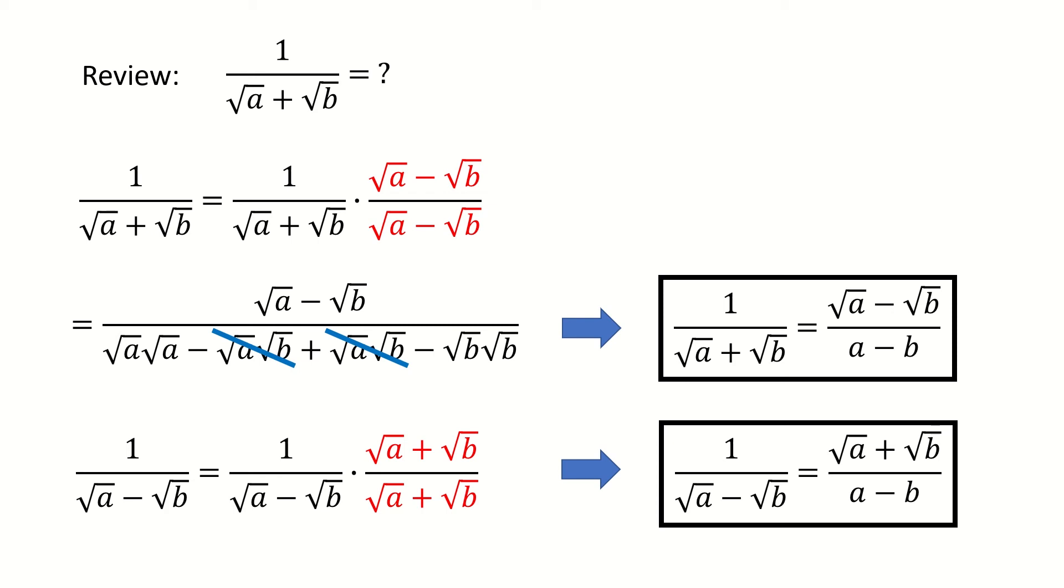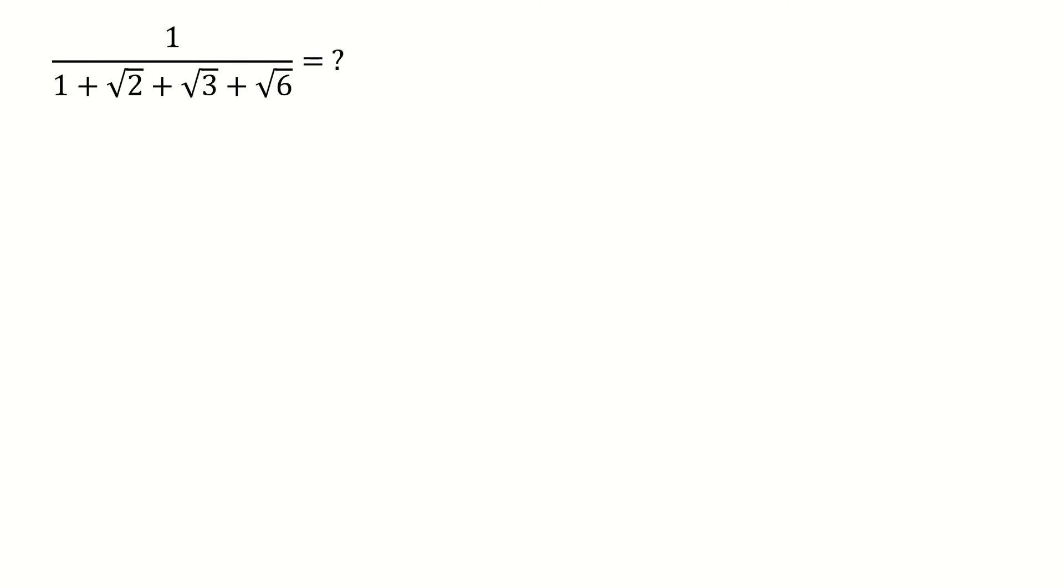Now we move to the problem. For this problem, we found there's a big difference comparing to the example in the previous slide. Here we have to deal with the four terms in the denominator. But in the example, we only deal with the two-term cases. So how can we do that?